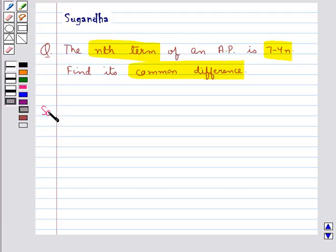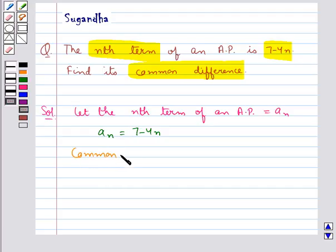Let's move on to the solution for this question. Let the nth term of an AP be equal to a_n, and from the question we have that a_n is equal to 7-4n. Then we have the common difference